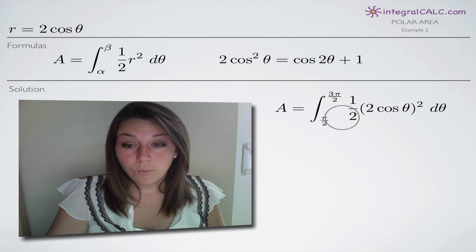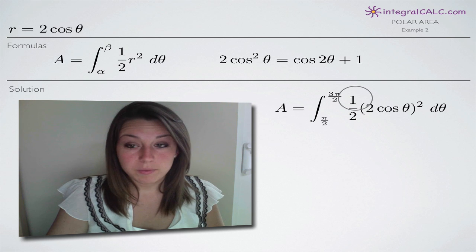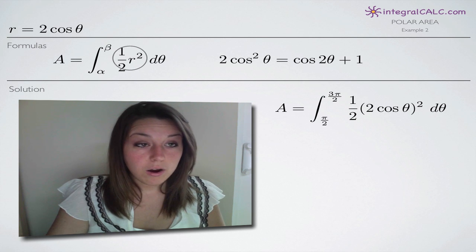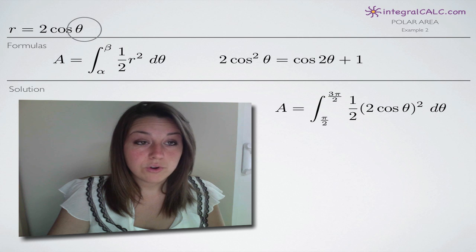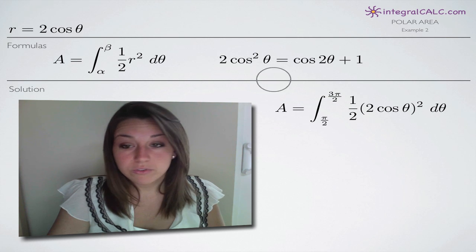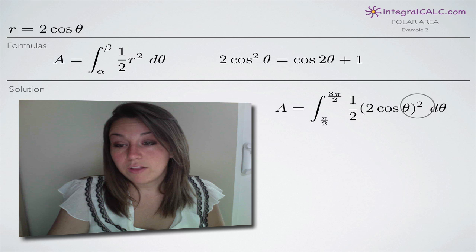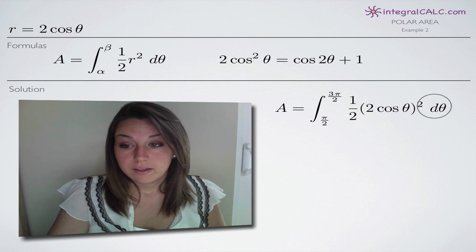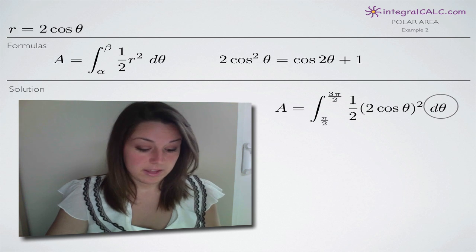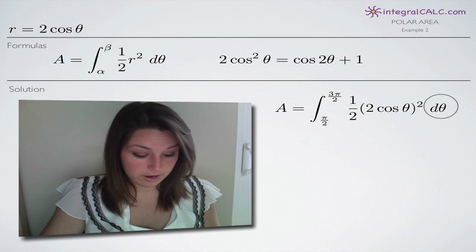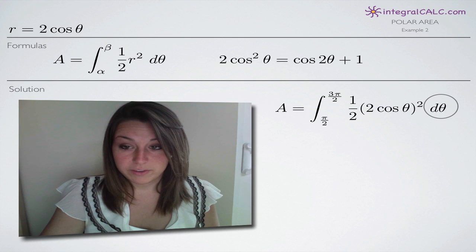When we plug those into our area formula, we integrate from pi over two to three pi over two. We leave the one-half because it's part of the area formula, and for r we substitute two cosine theta, which gets squared as part of the formula, followed by d theta. That's how we set up our integral.